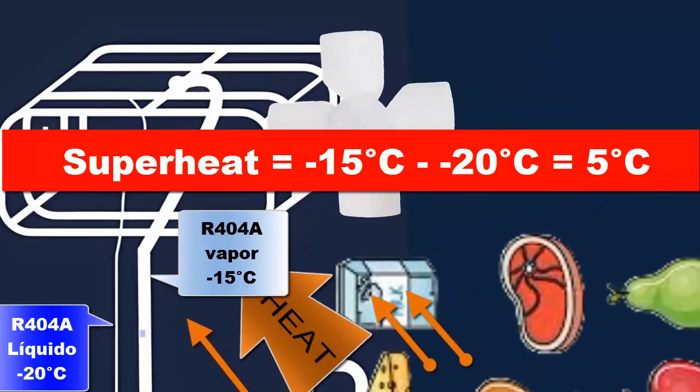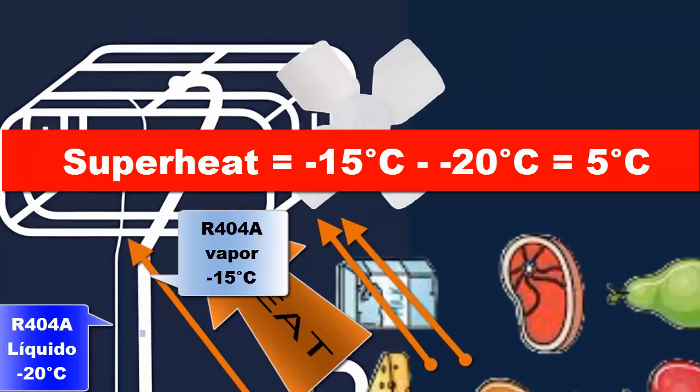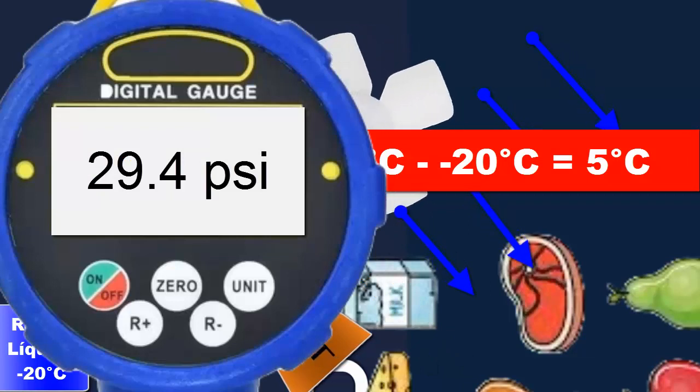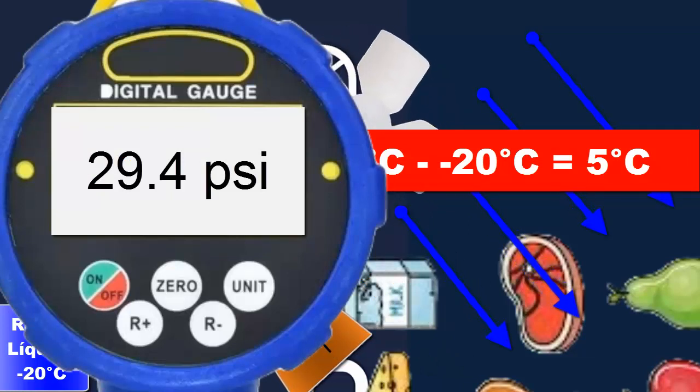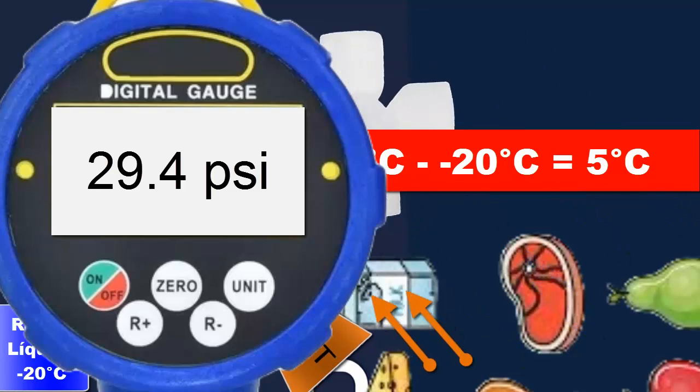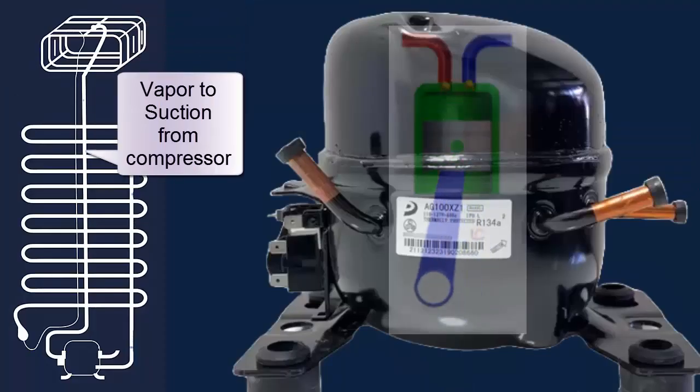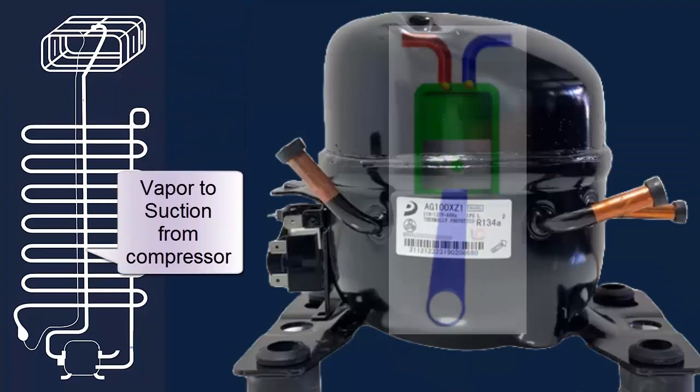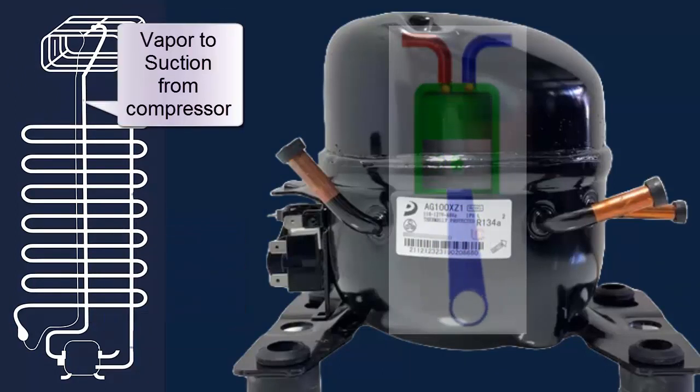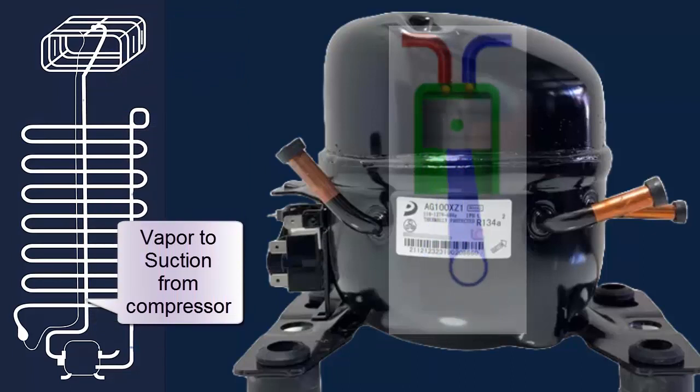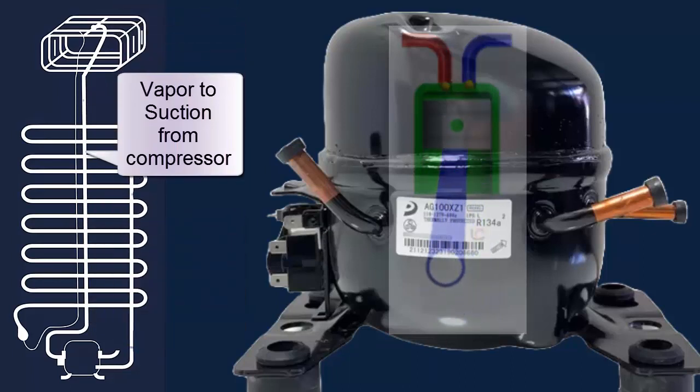Although the temperature has a slight change, we can approximate and say that the pressure of the R404A at the evaporator outlet is practically the same, still 29.4 pounds per square inch. The R404A, now in a vapor state, heads to the compressor through the suction pipe, which we can identify as the thickest pipe of the compressor.